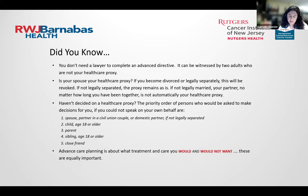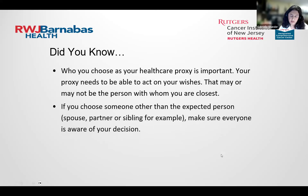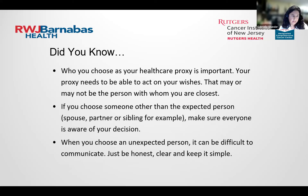ACP is about what treatment and care you would and would not want — these are equally important. Who you choose as your health care proxy is very important. Your proxy needs to be able to act on your wishes, and that may or may not be the person with whom you are closest. If you choose someone other than the expected person — for example, not your spouse or sibling — make sure everyone is aware of your decision. Some suggestions: be honest, clear, and keep it simple.